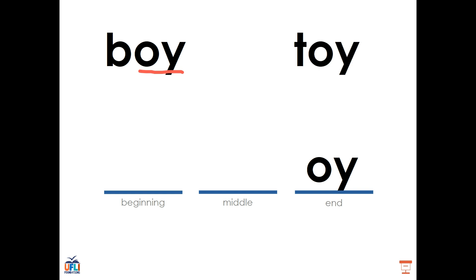We also see this in the word toy. O-Y is at the end saying OI in the word toy: T, OI, toy.